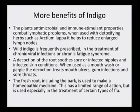A decoction of the root soothes sore or infected nipples and infected skin conditions. When used as a mouthwash or gargle, the decoction treats mouth ulcers, gum infections and sore throat. The fresh root including the bark is used to make a homeopathic medicine, used specially in the treatment of certain types of flu. From flu to chest pain to all kinds of antibacterial, antiviral and anticancer diseases, one can see that it has a wide spectrum of effectiveness on different types of ailments.